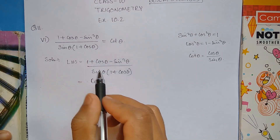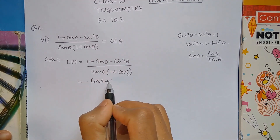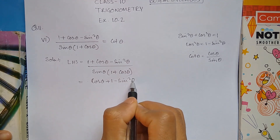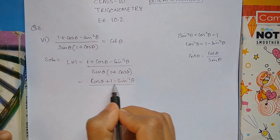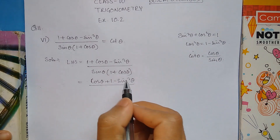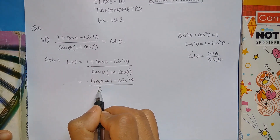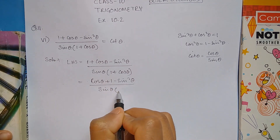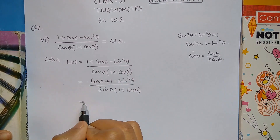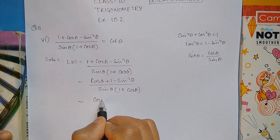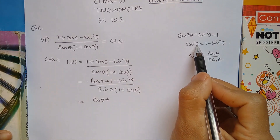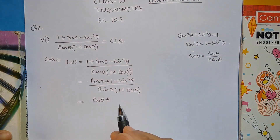we are going to use 1 minus sin squared theta. This is equal to 1 minus sin squared theta equal to 4 theta. In the next step, we are going to get sine theta times 1 plus cos theta. Next step is cos theta plus 1 minus sin square theta.